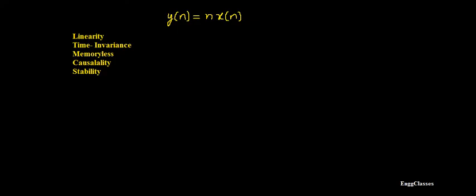Welcome to NG Classes YouTube channel. In this video we will consider an example on properties of systems. The system being considered is y(n) = n·x(n). This system is a discrete time system and the task is to test whether this system is linear, time invariant, memoryless, causal, and stable.